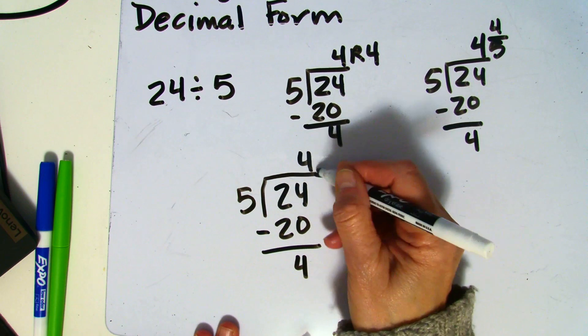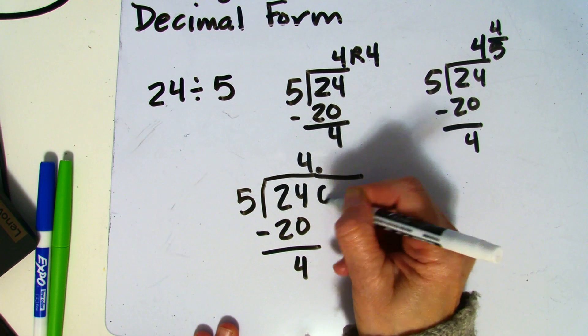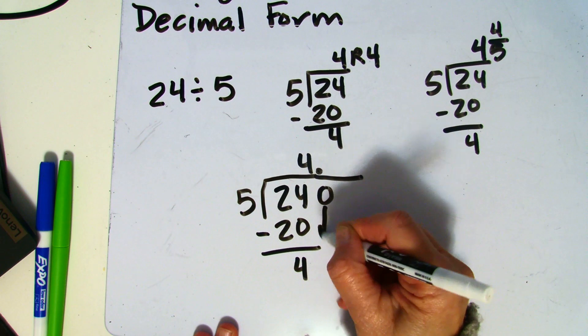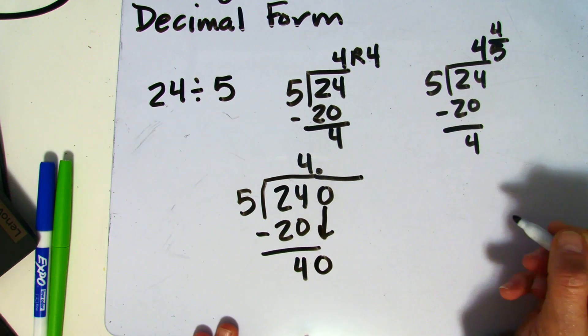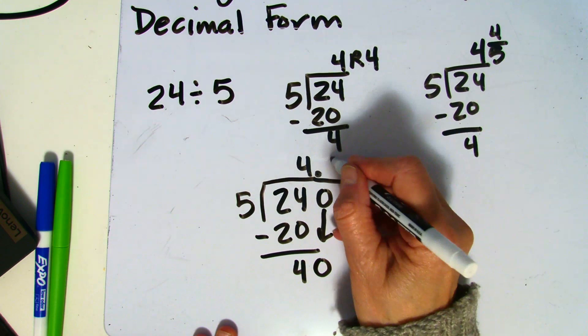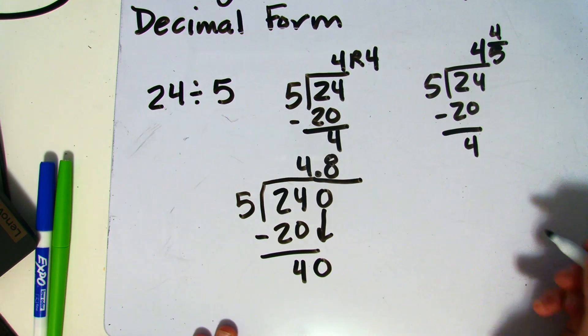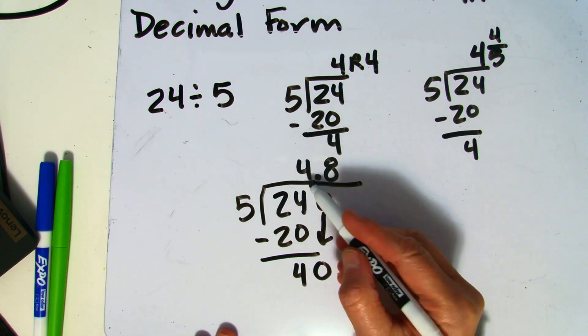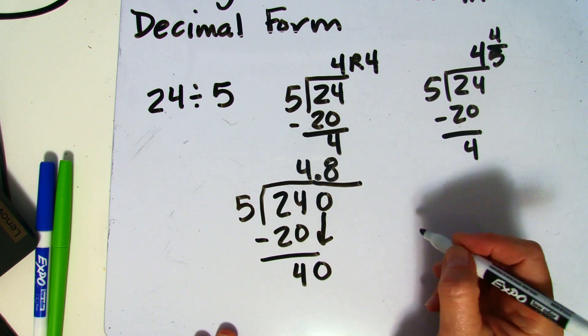Now I want to add a decimal point and a zero and then bring down that zero. 5 will go into 4 8 times. So this is read as 4 and 8 tenths.